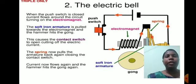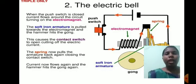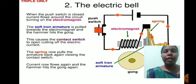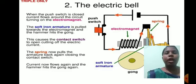Next, the electric bell. When the push switch is closed, current flows around the circuit, turning on the electromagnet. The soft iron armature is pulled towards the electromagnet and the hammer hits the gong. This causes the contact switch to open, cutting off the electric current. The spring pulls the armature back, closing the contact switch. Current flows again and the hammer hits the gong again.